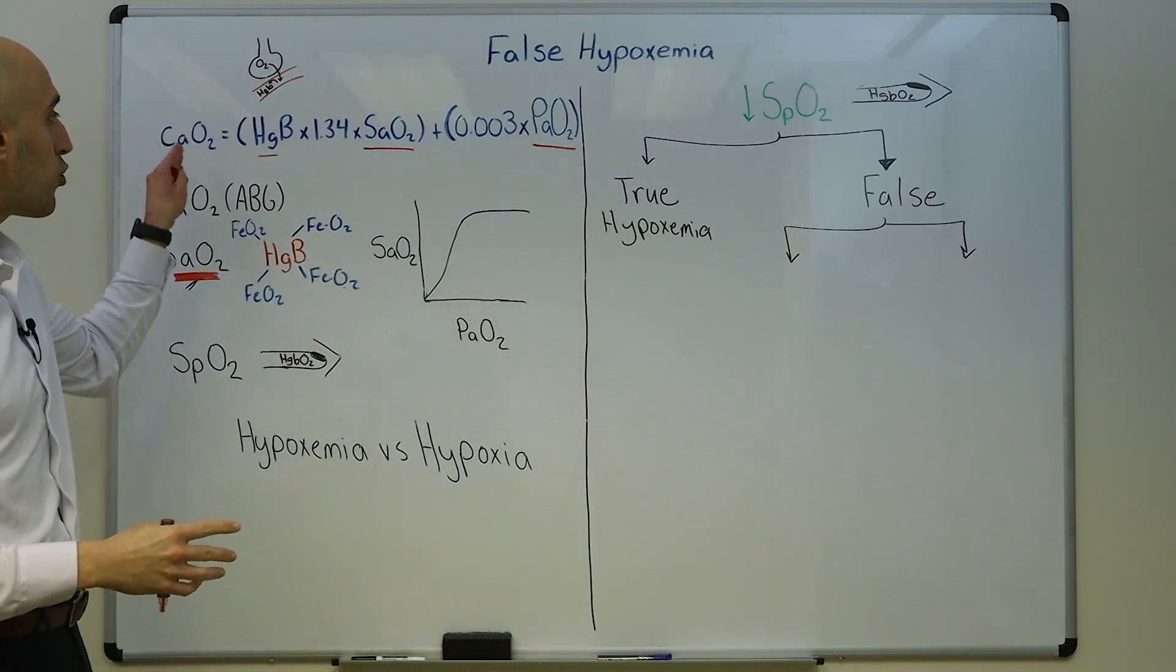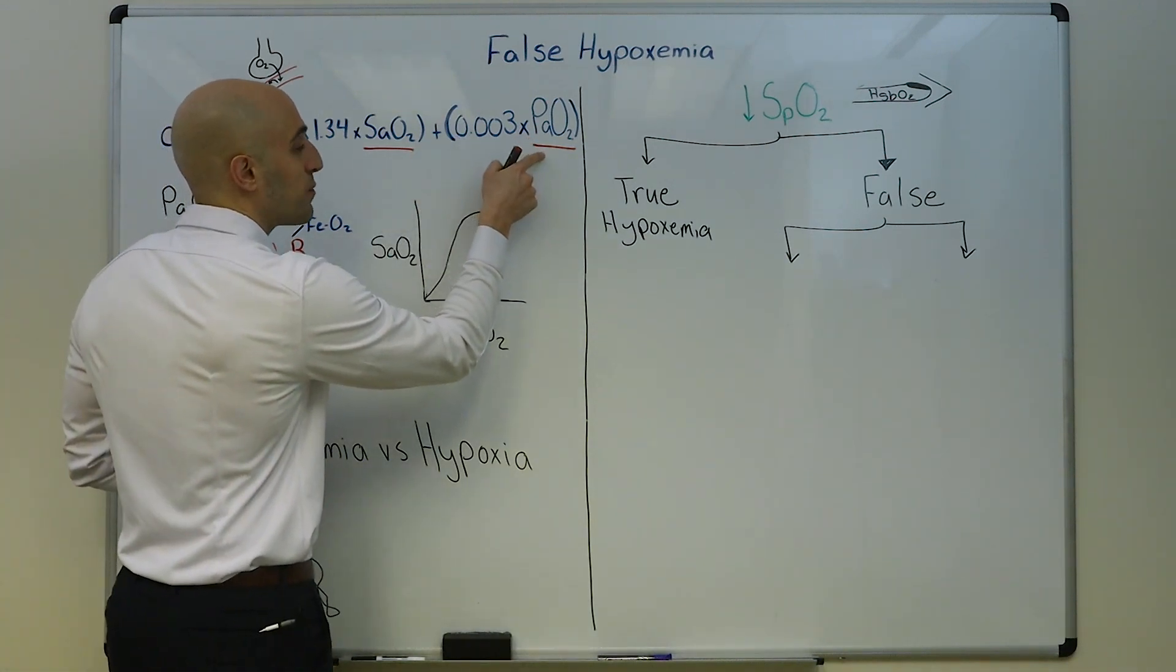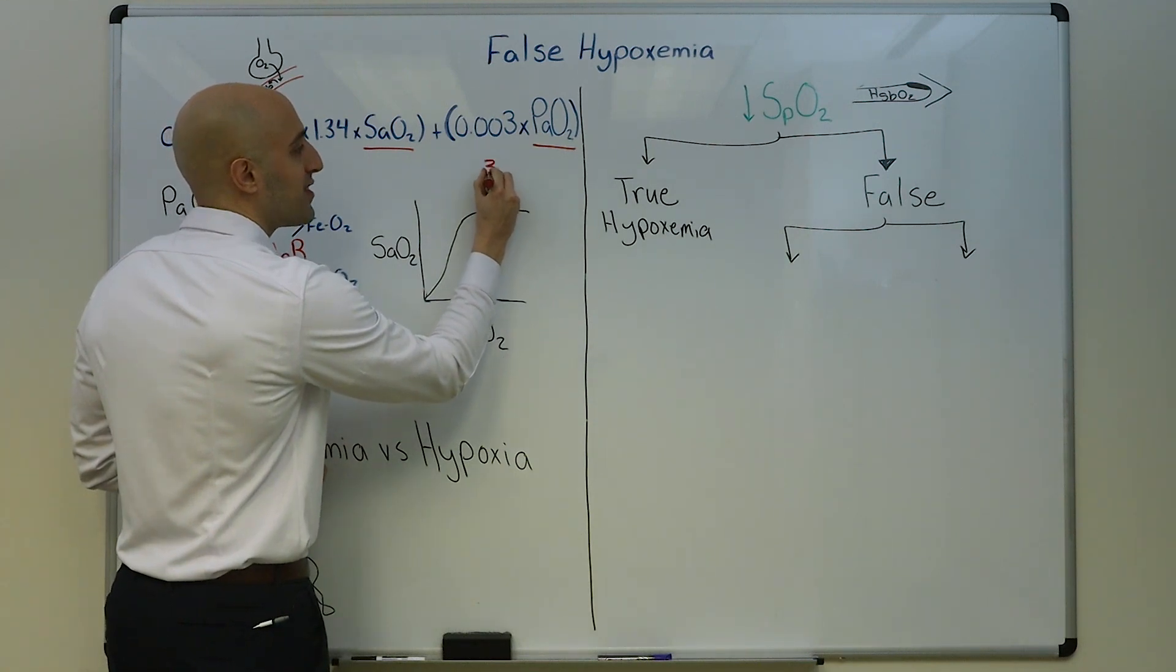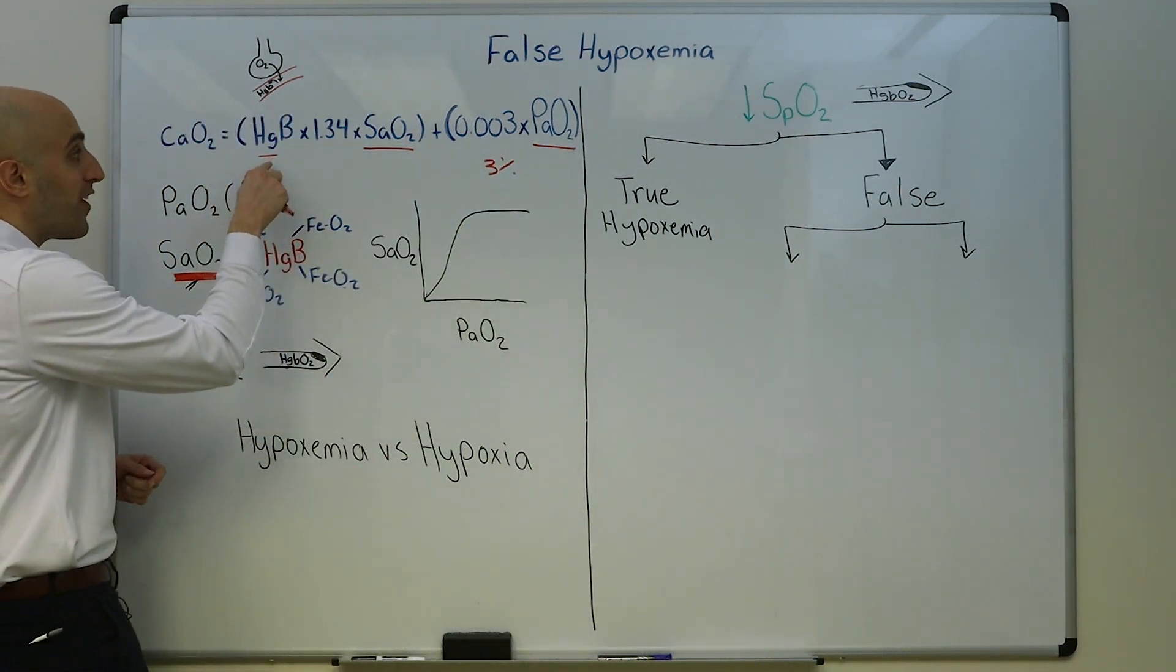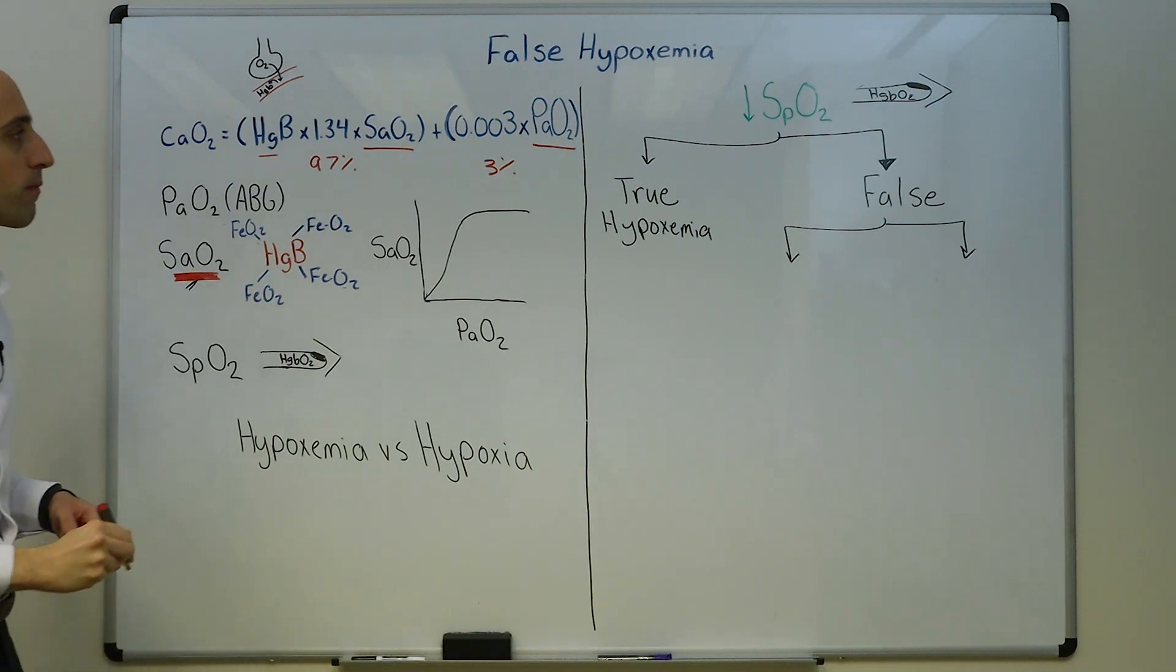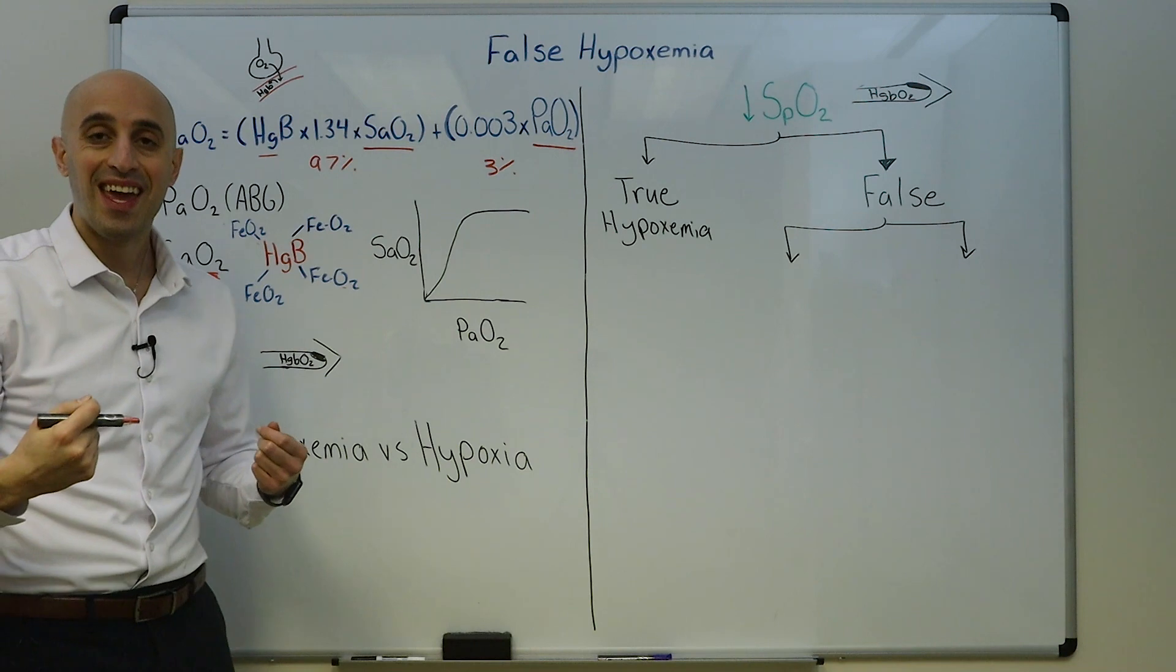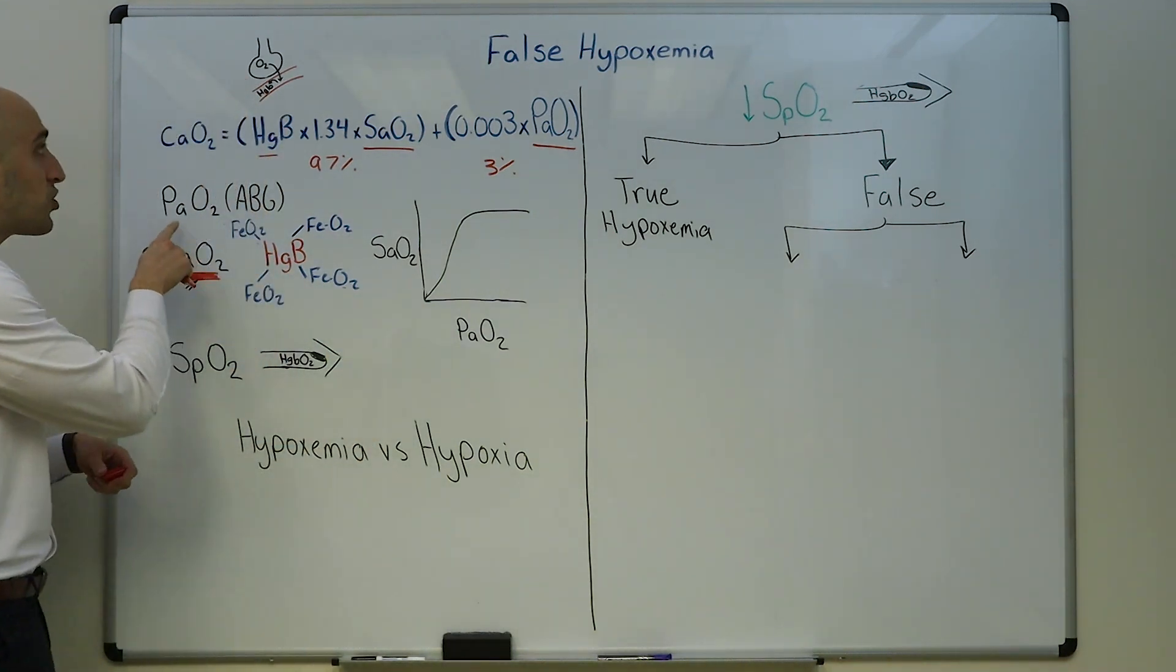We first have to start with this equation. The content of arterial oxygen, meaning the oxygen available in the blood to reach the cells to prevent cellular hypoxia, depends on three variables: the hemoglobin, the oxygen saturation of hemoglobin, and the partial pressure of oxygen.